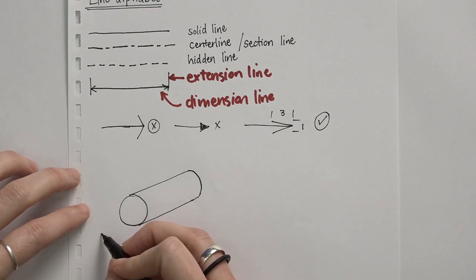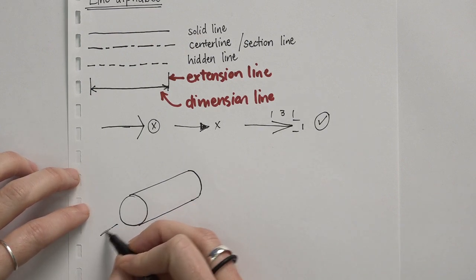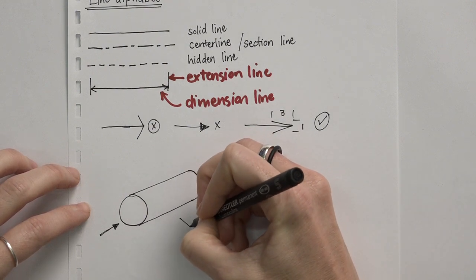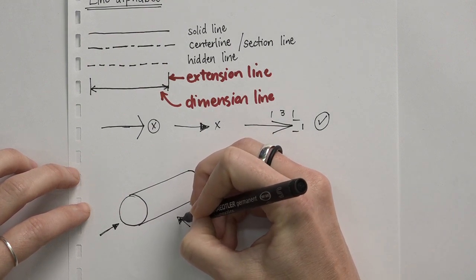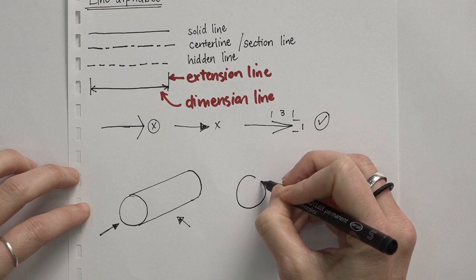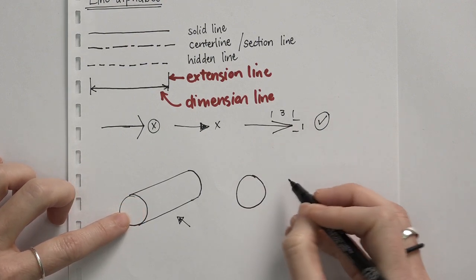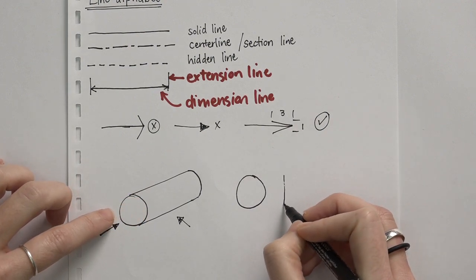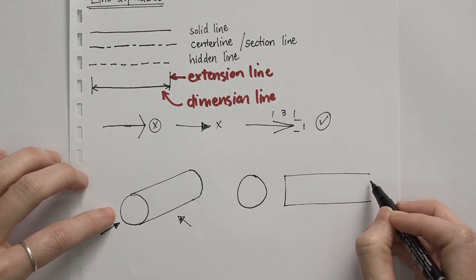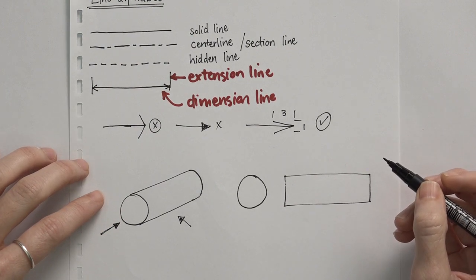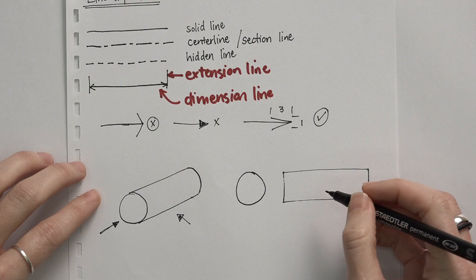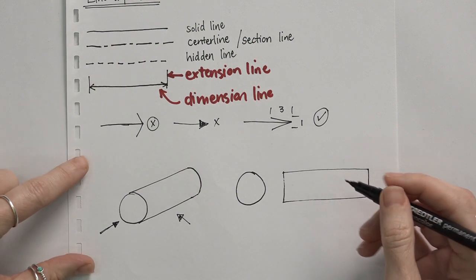If we want to draw the views for this component, we look in two directions and make two views — one of just this face and the side view. For any circular feature we have to add a center line, and the center line we always add on all the views.